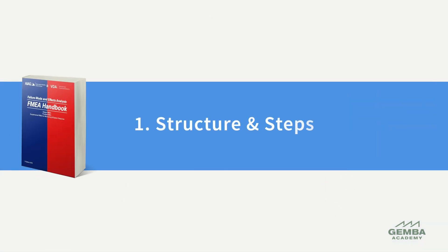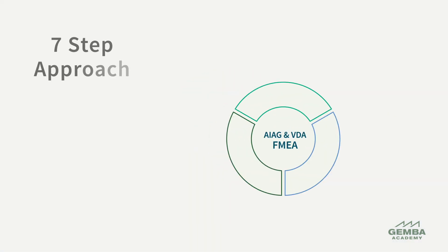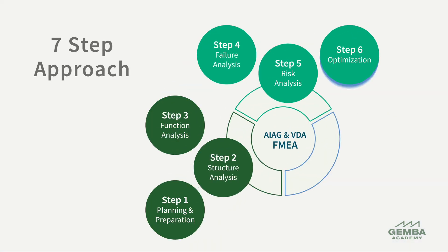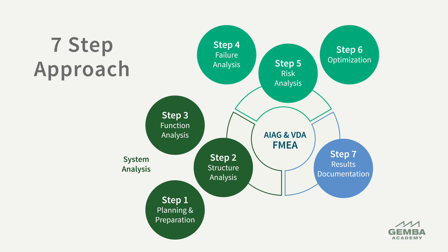Let's review eight main differences between the AIAG VDA approach and the earlier versions of FMEA. The first major change is the structure and steps of FMEA. The 2019 FMEA handbook introduced a seven-step process to align more closely with VDA, or the German Automotive Industry Association standards, focusing on a structured approach to risk analysis. These seven steps are grouped into three phases: system analysis, failure analysis and risk mitigation, and risk communication.